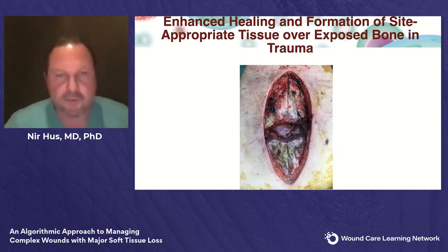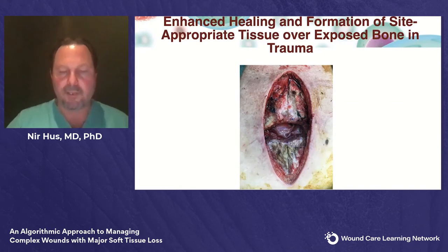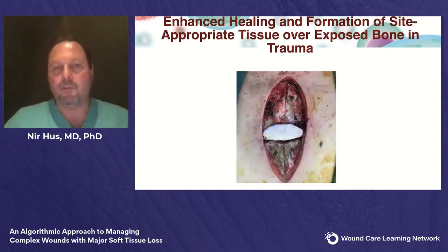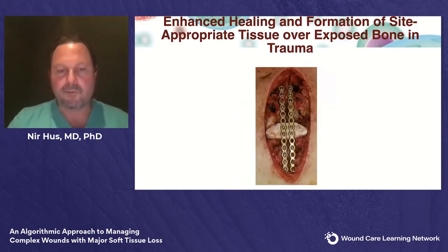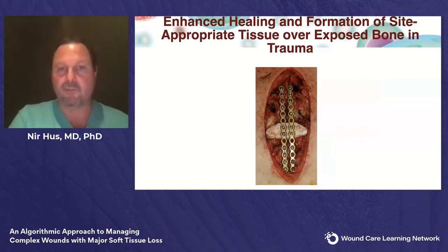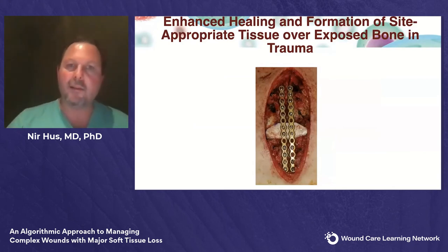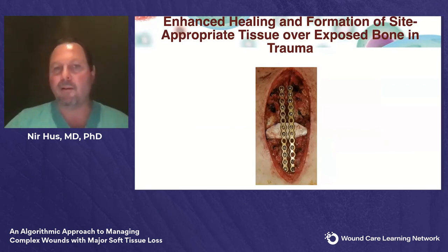First we debrided the sternum until we had viable tissue without signs of infection. Then we started reconstruction. The UBM matrix was laid underneath the sternum. On top of it, we took a cadaveric bone from a pelvis, cut it to size, and placed it to bridge the sternum, using titanium plates over it. We placed the UBM matrix and created flaps from the left and right pectoralis major, closing over it. A wound that initially failed conservative management, got infected, was reopened and readdressed — then easily achieved closure with the aid of the UBM matrix.